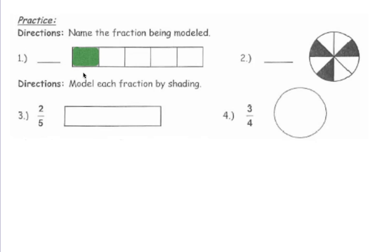Name the fraction being modeled. We have 5 sections, so that's your denominator — the number on the bottom — and your numerator, the number on the top, would be how many are shaded, so 1 fifth.